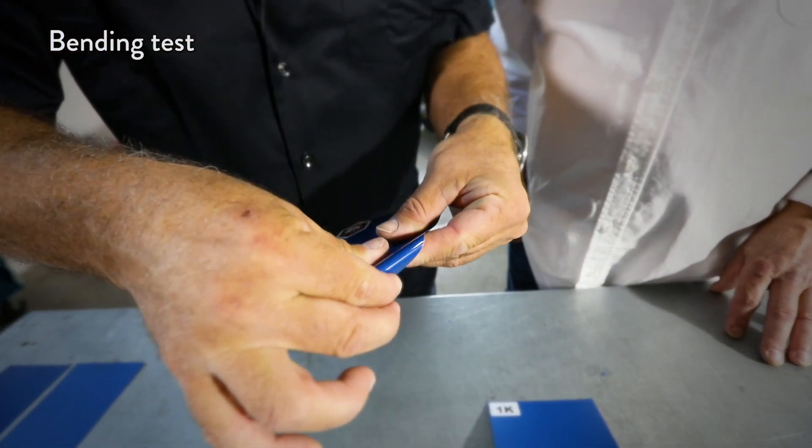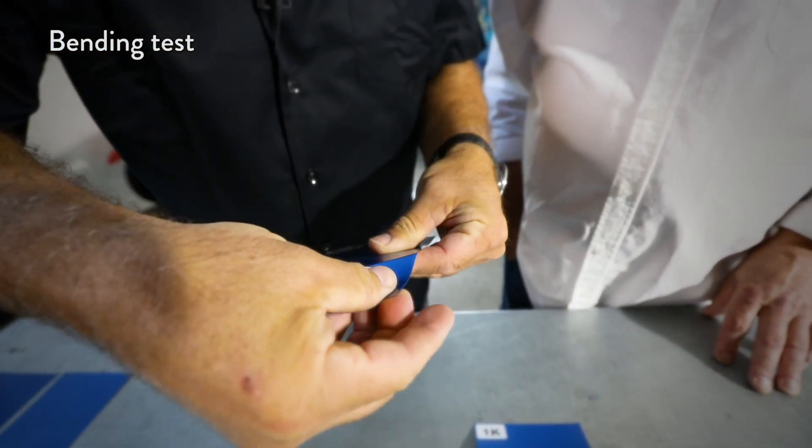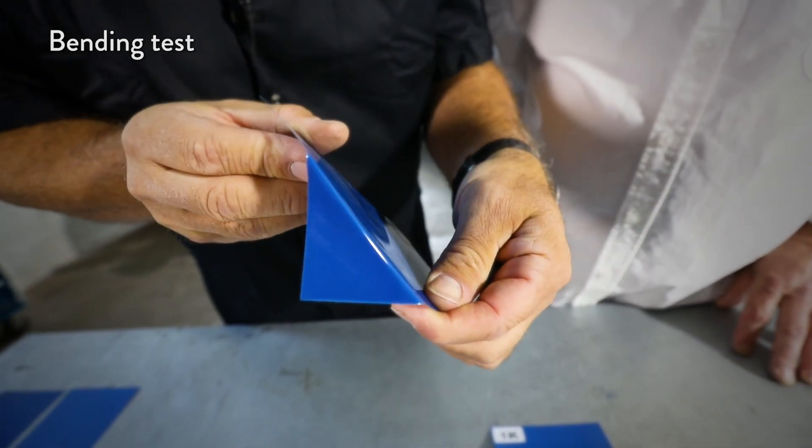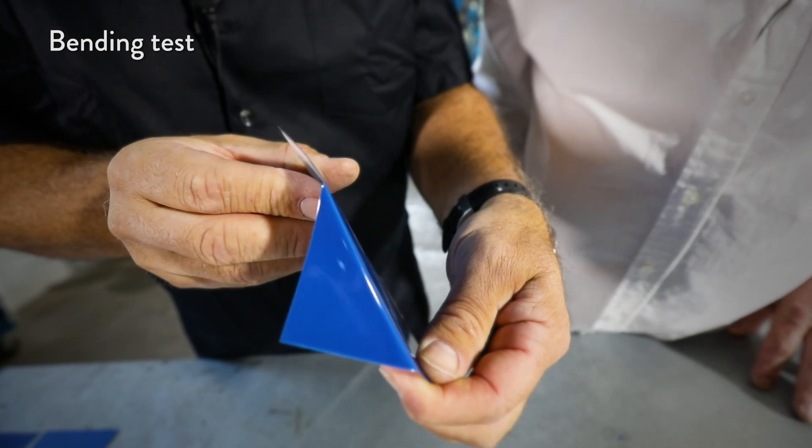2K will not crack, even if it's bent at 180 degrees angle. This makes the coating also very resistant to external impacts, such as stone chips.